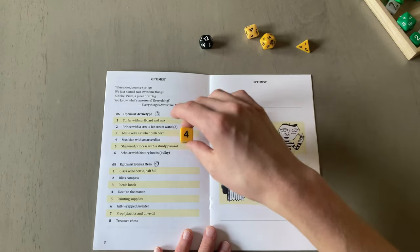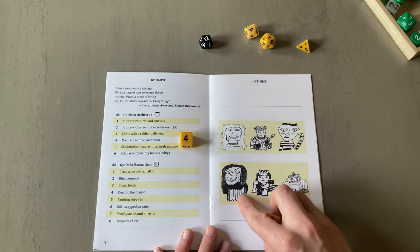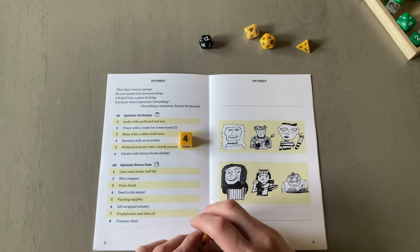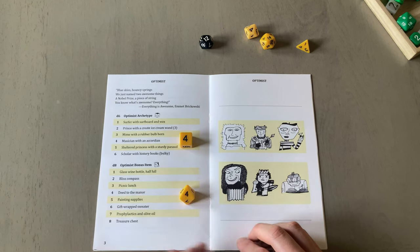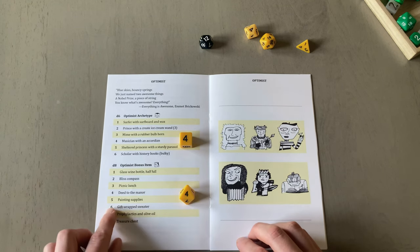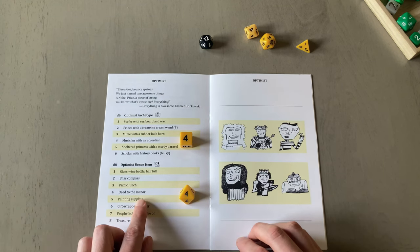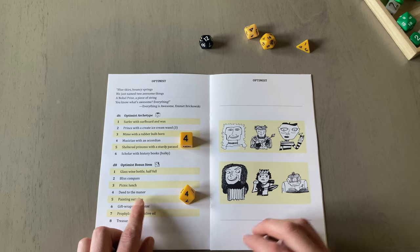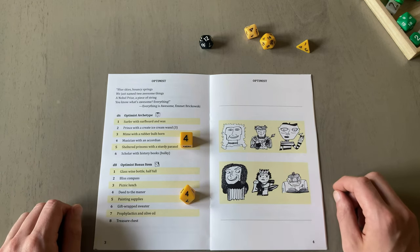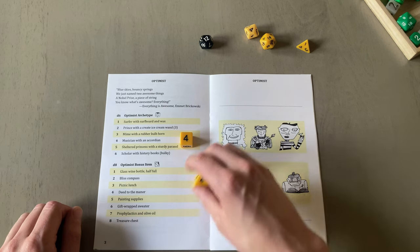Four. Makes me a musician with an accordion. Again, any likeness to actual famous accordionists is purely coincidental. And a deed to the manor. All right. So this person actually owns the manor, the haunted house that they're going into.